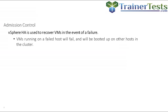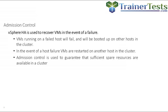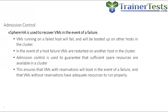When we have a host failure with HA, all of the VMs that were running on that host will fail, and they'll get booted up on other hosts within that cluster. As these VMs get restarted on these other hosts, we're going to use Admission Control to ensure that those hosts that still remain have enough spare resources to adequately run those virtual machines.